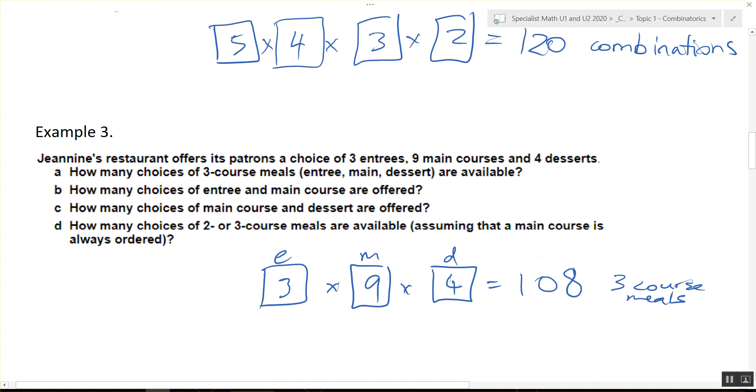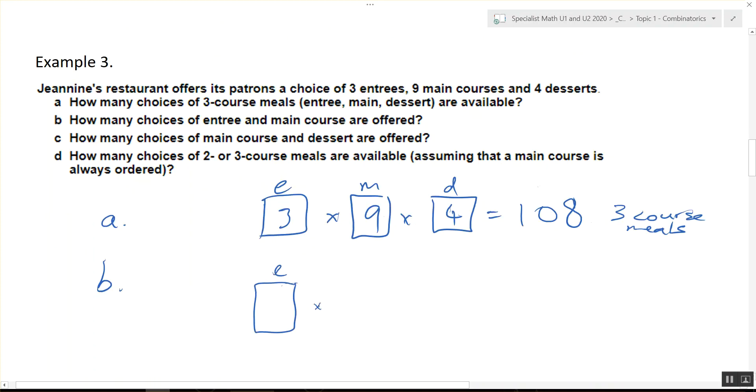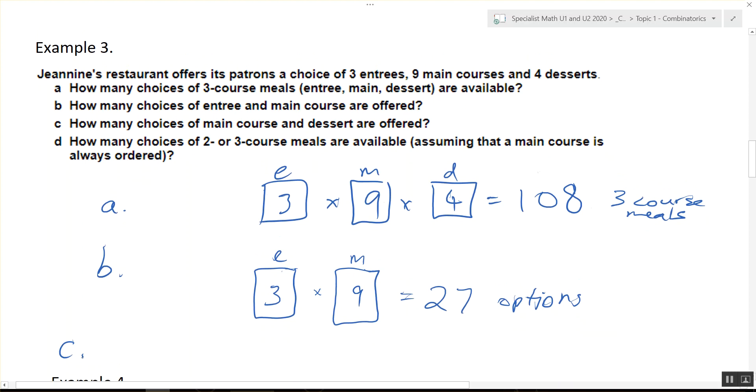All right, you do the next three now. So entree and main, there's 27 options. Main and dessert, there are 36 options.